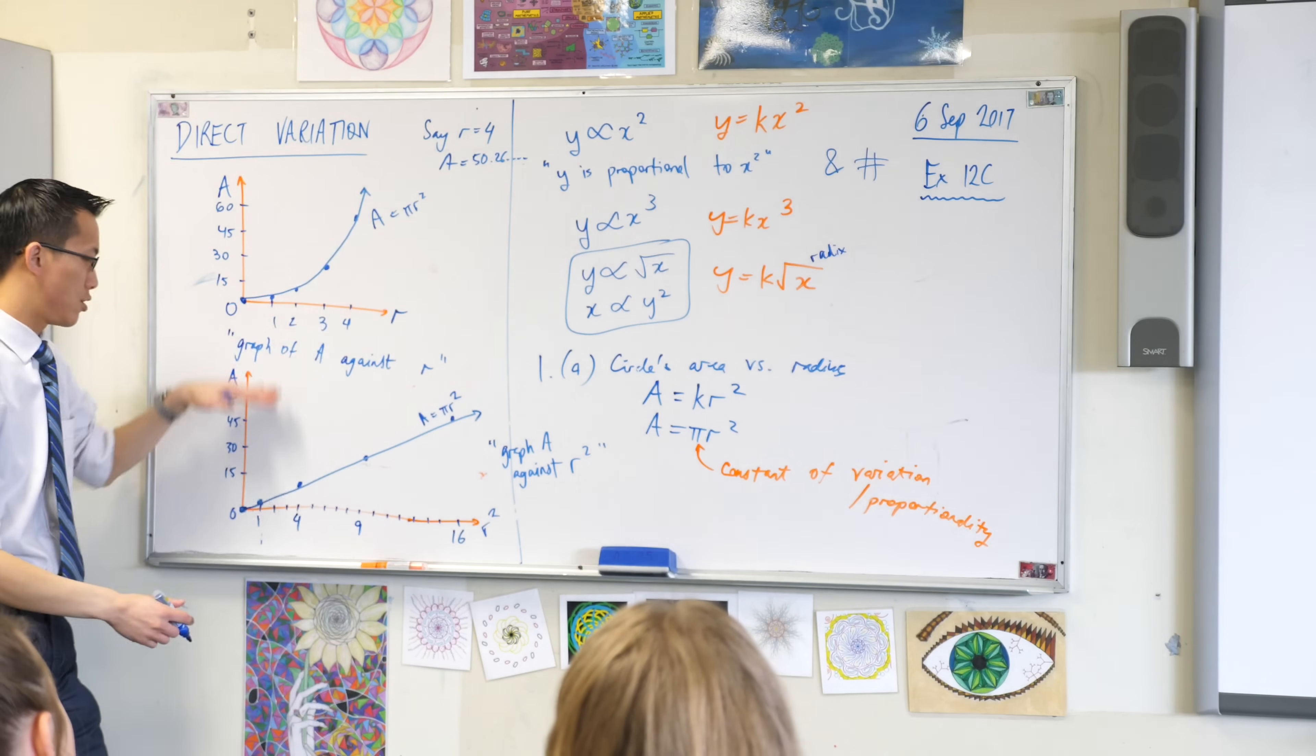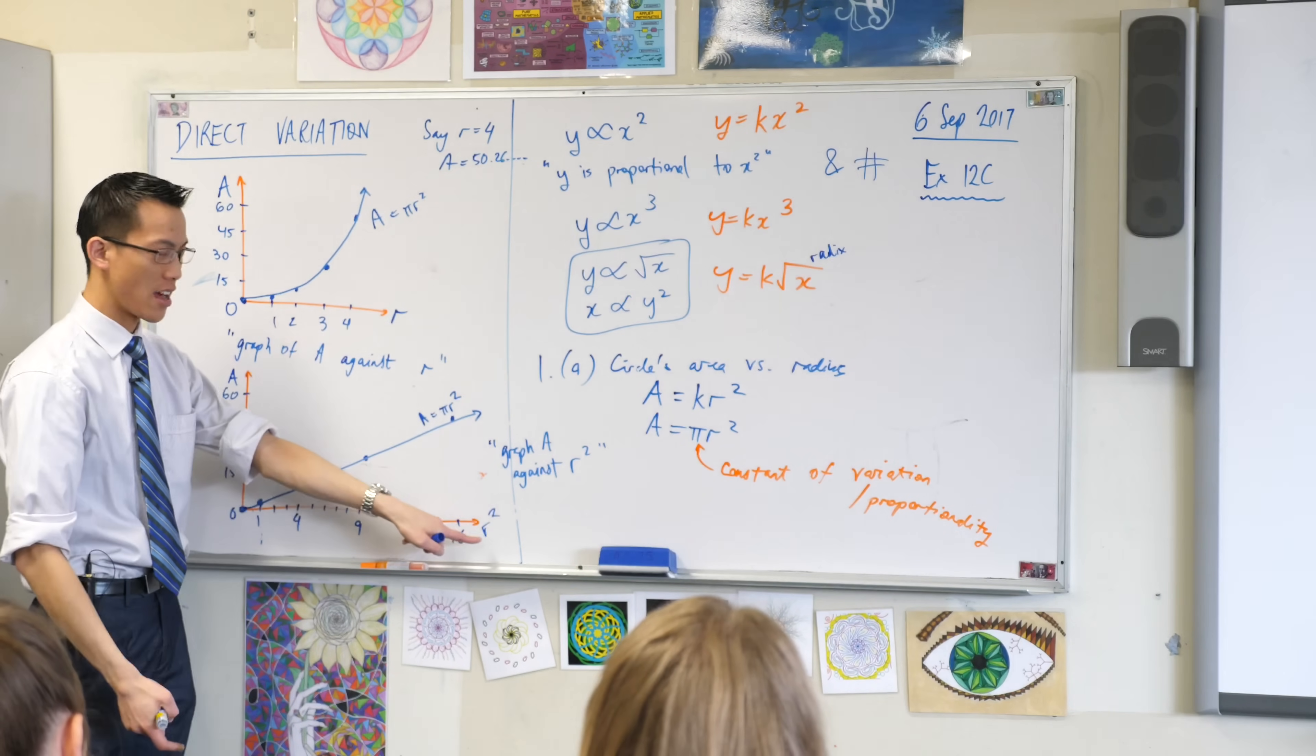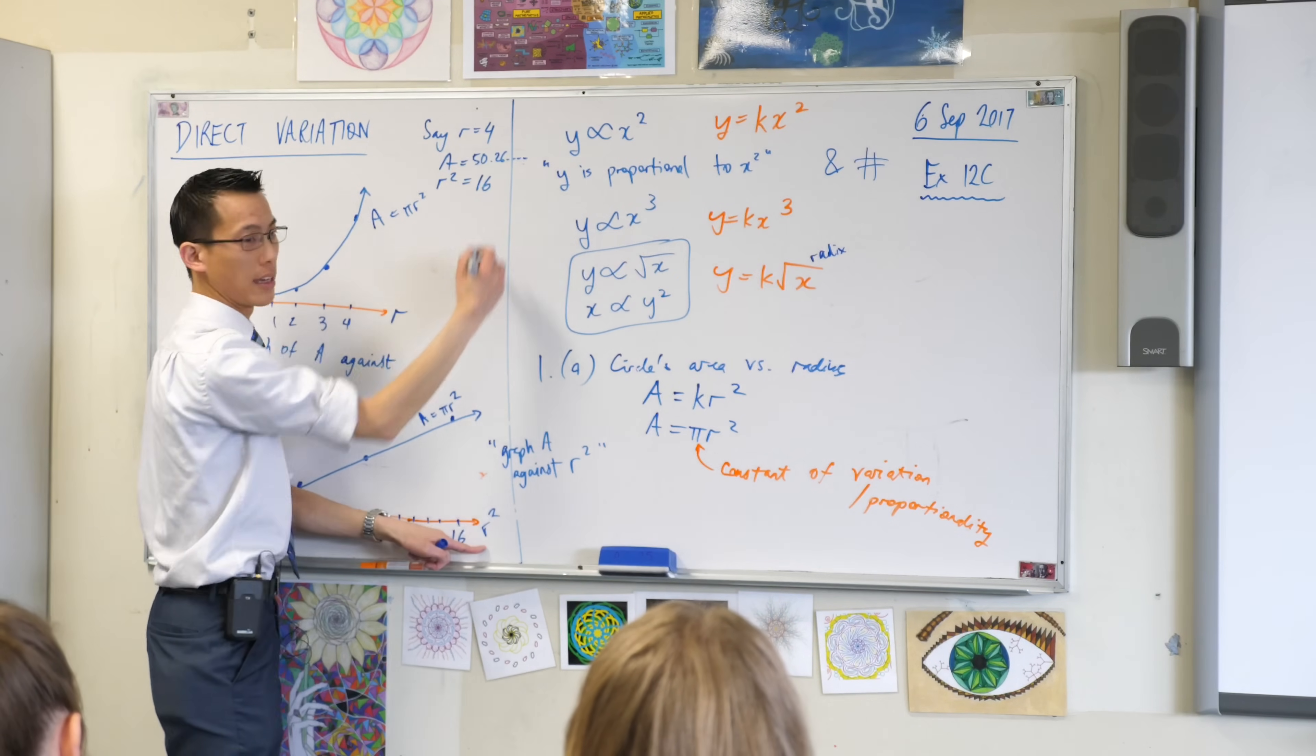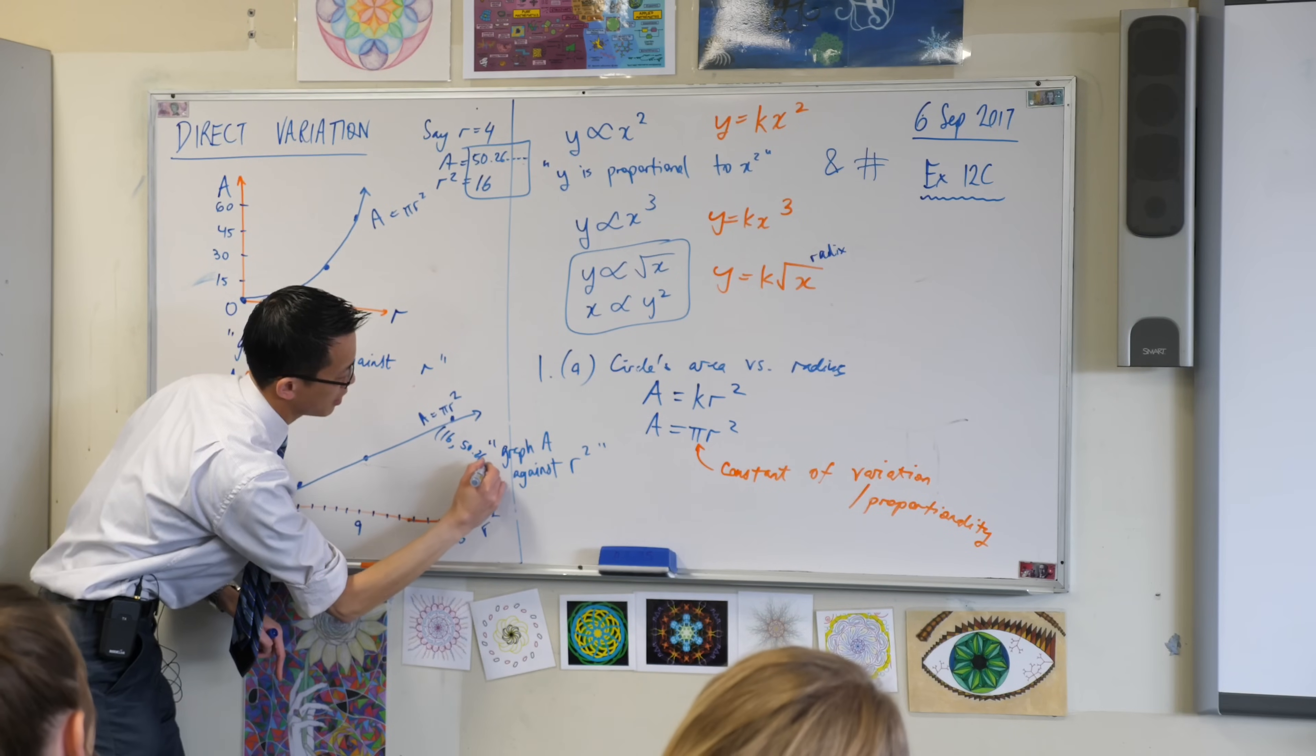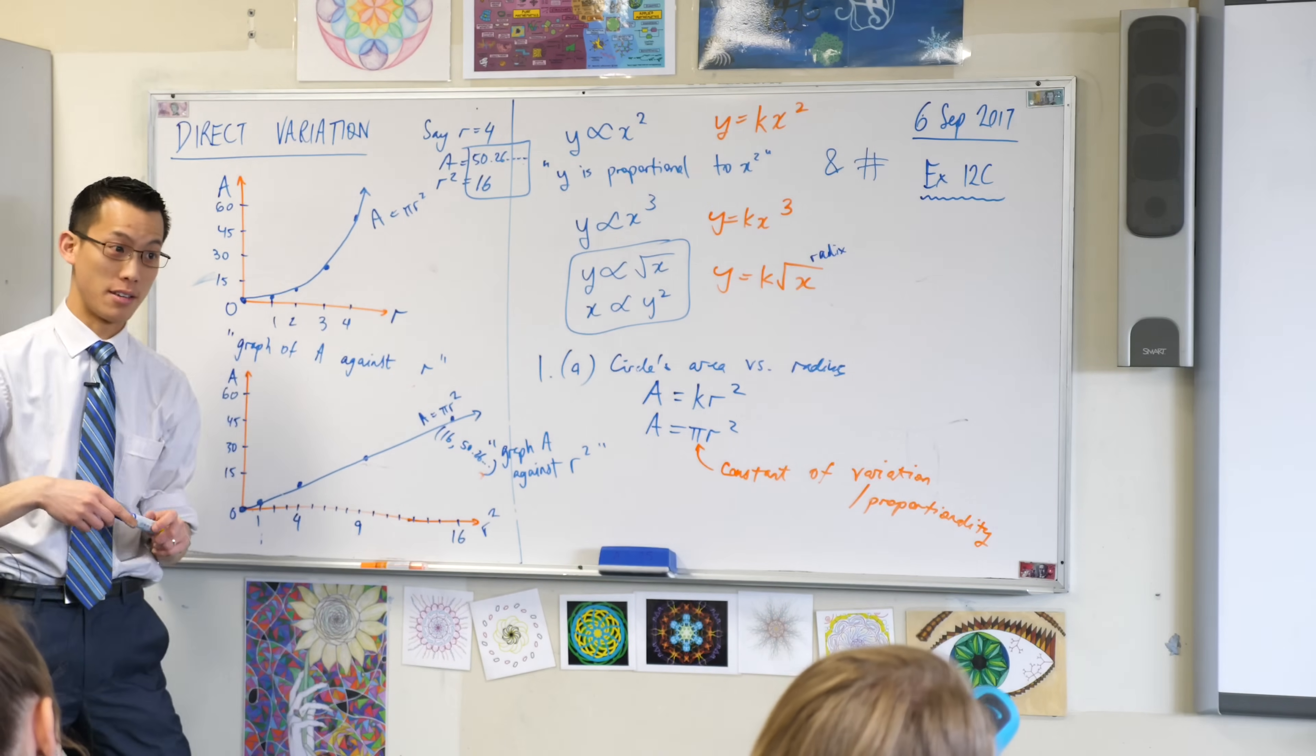So now you know what value for a you should do. So I went up to 50 or wherever that was. But now when I look at the horizontal thing, I don't want to plot r equals 4, because it's not an r axis. It's an r squared axis. So I need to know what r squared is, which in this case is 16. So these guys are my coordinates. That guy there is 16 comma 50.26 etc. So do it just like you did before, but your extra step is you've got to know what this axis is actually talking about, which is r squared in this case.